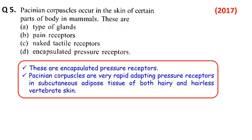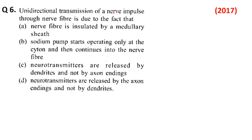2017 में यहाँ से 3 questions पूछे गए हैं, nervous system से, neural control and coordination से। उस respect में nervous system बहुत important है। Unidirectional transmission of nerve impulse through nerve fiber is due to the fact — transmission of nerve impulse unidirectional क्यों है, और इसके लिए क्या fact responsible है।